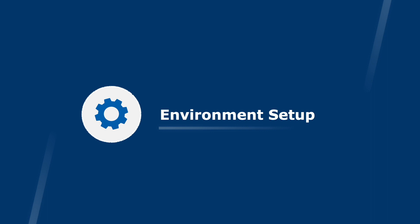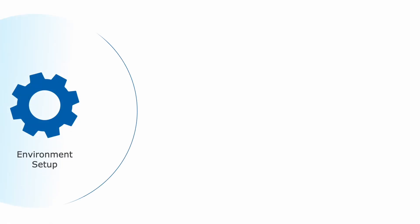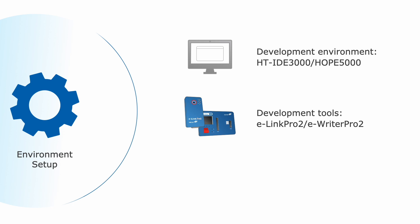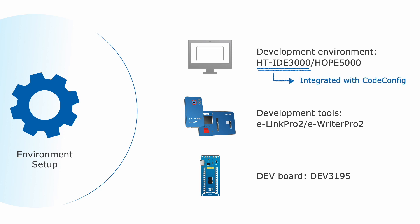Environment setup. The environment setup includes three parts: the development environment HT-IDE 3000 and HOPE 5000, the development tools E-Link Pro 2 and E-Writer Pro 2, and the development board DEV3195. The HT-IDE 3000 also integrates an intuitive graphical user interface software, CodeConfig, which will be introduced in detail later.